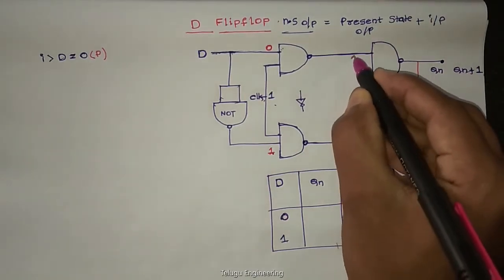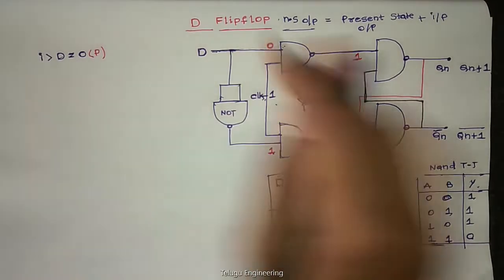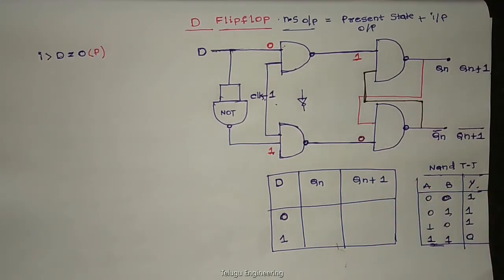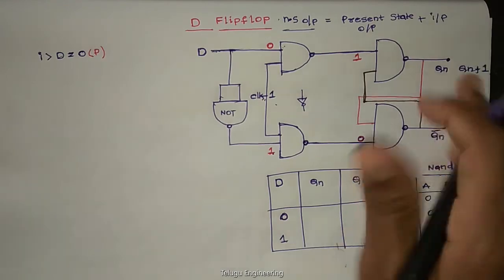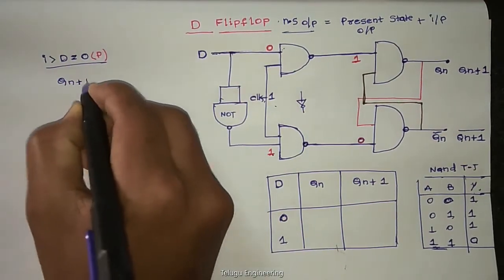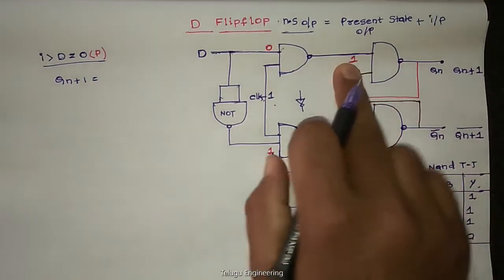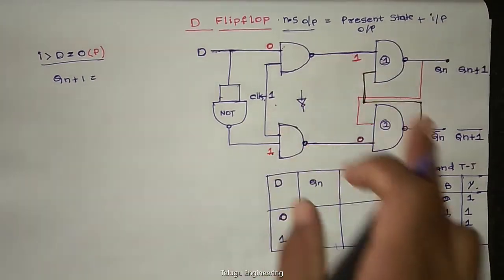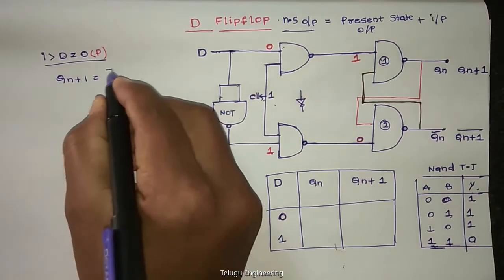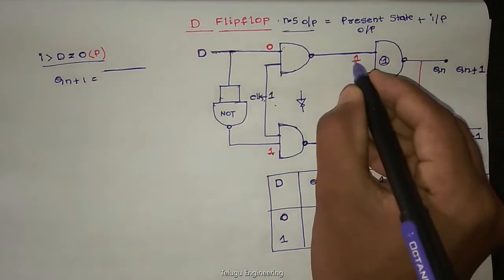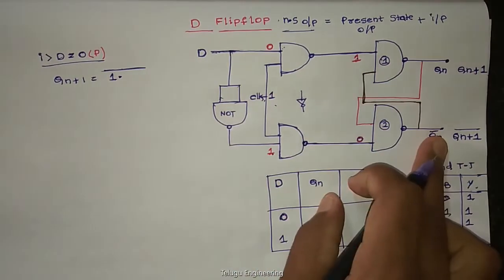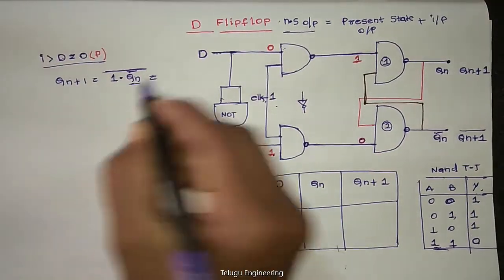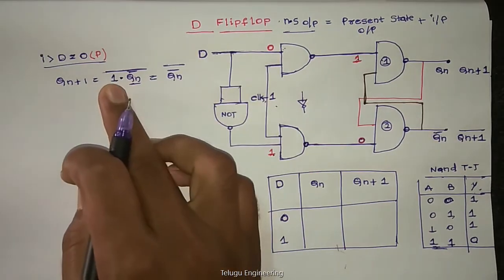We need next state output Qn+1. So in this condition Qn+1, we depend on the Qn+1 and input. So let this is our NAND gate 1, this is our NAND gate 2. For NAND gate 1, inputs are 1 and Qn bar. Qn bar, NAND complement, what are inputs? 1 dot Qn bar. Qn bar.